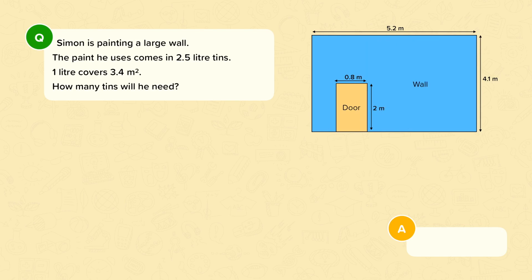So to work out the area of the wall I need to work out 5.2 times 4.1 which is 21.32. And then I need to subtract the area of the door. So I want to take away 0.8 times 2. Now when I work out 21.32 minus 1.6 I get 19.72. So this is the area of the wall that he needs to paint.